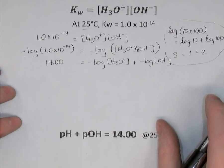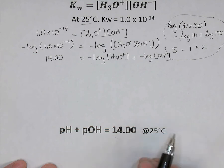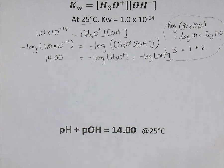So what we get is this final equation, pH of a solution added to the pOH of the solution will always equal 14.00 at 25 degrees Celsius. And that 14.00 came from the KW. It's actually the PKW, the negative logarithm of the KW value.